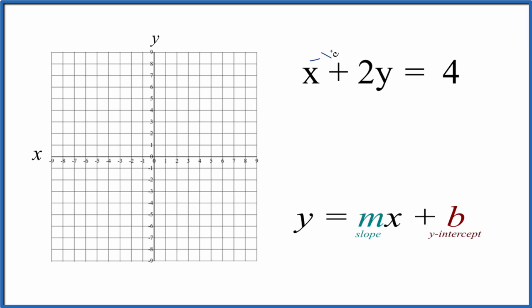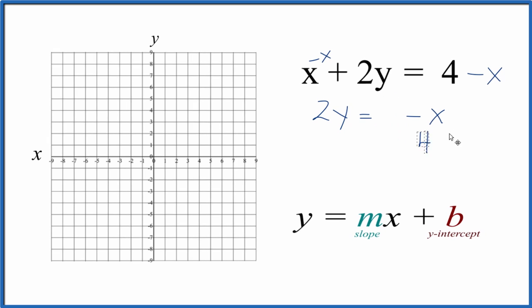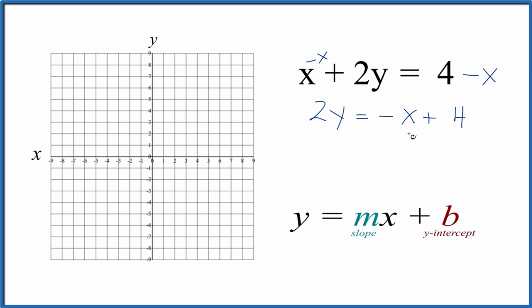So let's just subtract x from each side, that'll give us - and then let's move the 4 here, so we have the x up here just like slope-intercept form. Next we just need to divide both sides by 2. That'll get us y by itself.